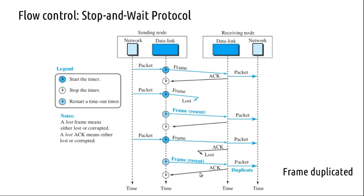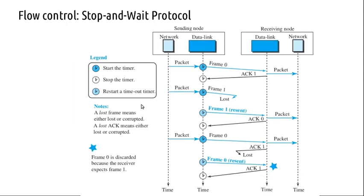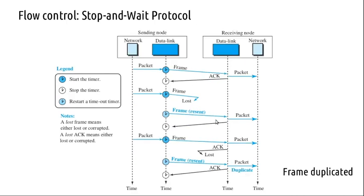This resending creates a case of duplication. To prevent this duplication of frames, we use sequence numbers. Frames can be resent because the sender does not receive back an acknowledgement, so sequence numbers are used to manage this.